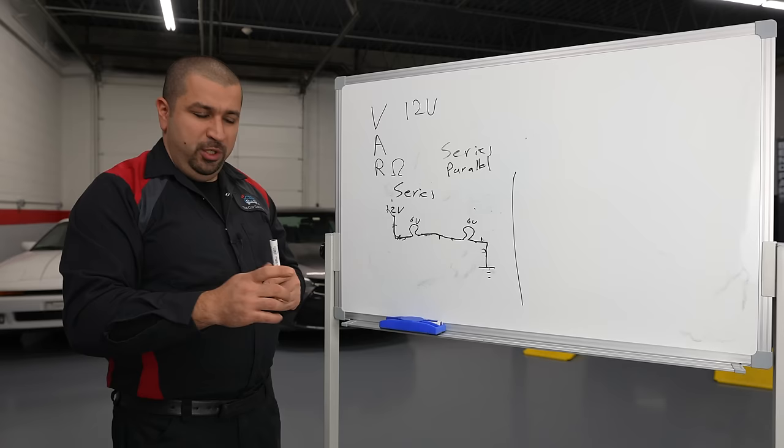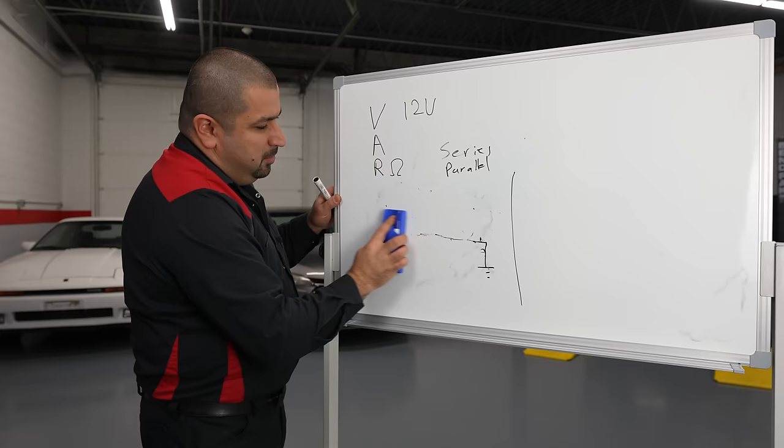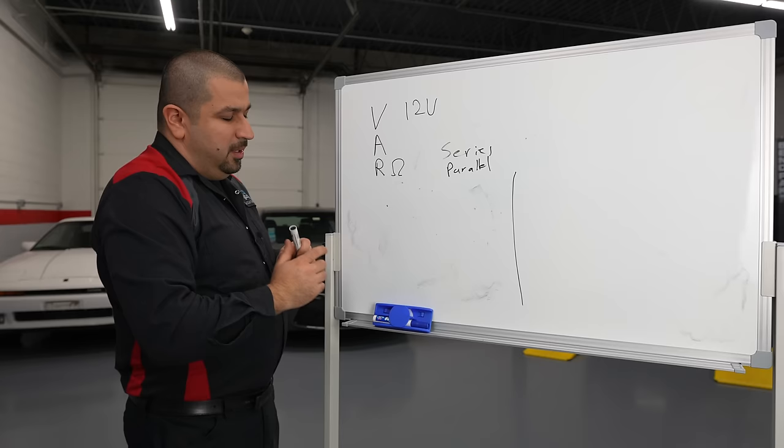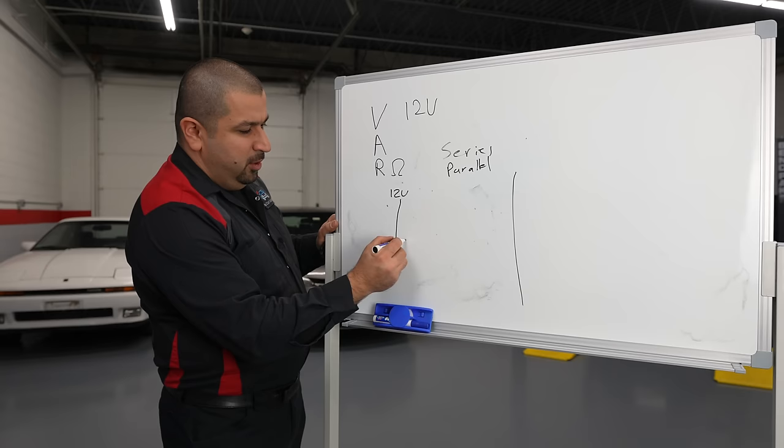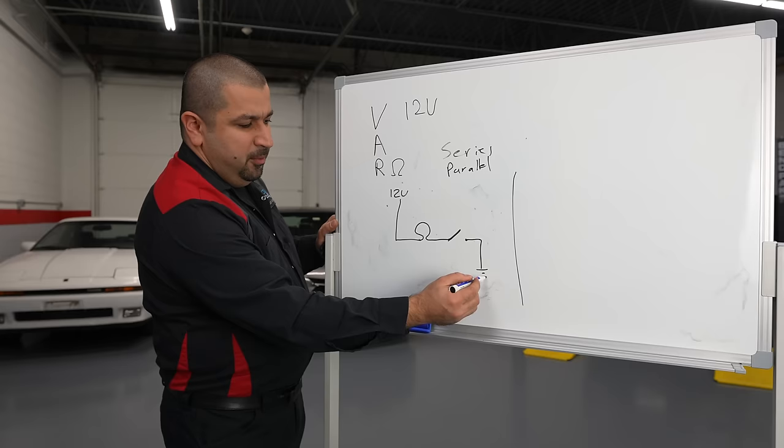Let's get rid of our series circuit here. Let's draw a more simple circuit. This is our 12 volt source. This is our wire. This is our bulb. This is our switch. And this goes to ground. Basically, you turn on this switch. This bulb comes on. Very simple circuit.